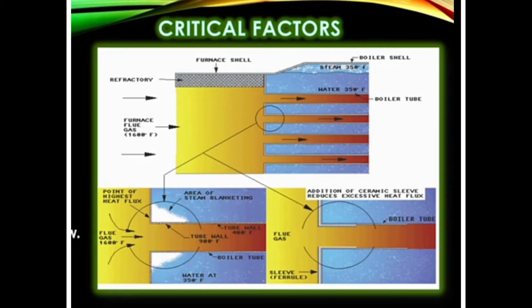In the above picture, everything is normal: flue gases are coming, water is inside the tubes, and steam is generating at 350 degrees in the boiler drum. Now, looking at the picture below, you can see that when flue gases enter, just before the tubes there are corners and edges where the heat flux is very high.